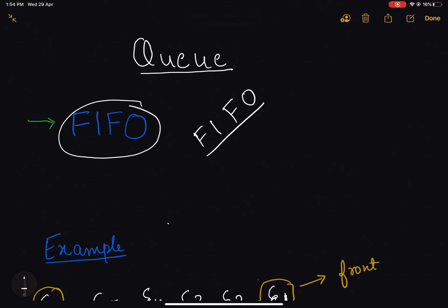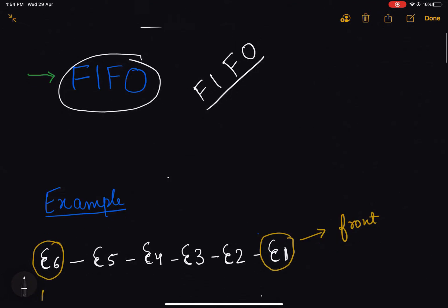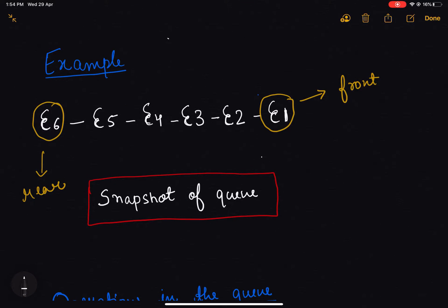Let's take an example to understand this. Let's say this is the snapshot of the queue at some particular time. This is the front element of the queue and this is the last element of the queue, which we can see as the rear element.